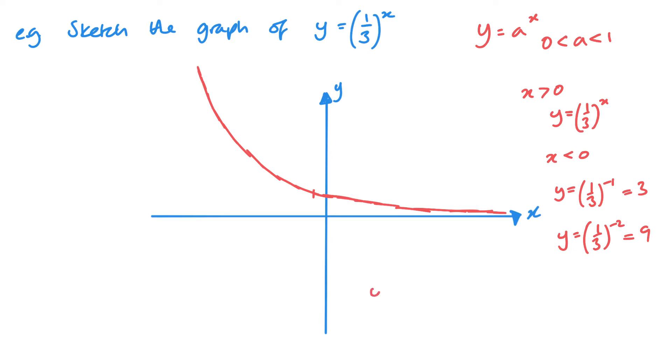Y equals 1 over 3 to the power x is exactly the same graph or the reflection of y equals 3 to the power minus x. If I think about it, y equals 1/3 to the power x is 3 to the power negative 1 to the power x, so that is 3 to the power negative x.